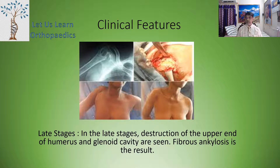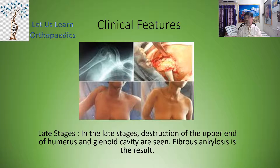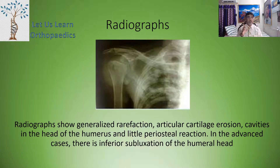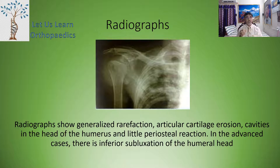The cold abscess formed could present at either the supraspinatus fossa, the deltoid, or the bicep. In the late stage, destruction of the upper end of the humerus and the glenoid cavity are seen, and fibrous ankylosis is the result. The radiographs generally show rarefaction, articular cartilage erosion, cavities in the head of the humerus, and minimal periosteal reaction.